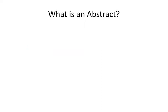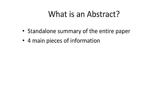Before we get too far, we have talked in previous videos about the different parts of a paper and what an abstract is, so go ahead and think for a minute — what is an abstract? How would you describe it? In general, an abstract is a standalone summary of the entire paper. If you just read the abstract, you would have a good idea of the main points and main findings. Those abstracts contain four main pieces of information.